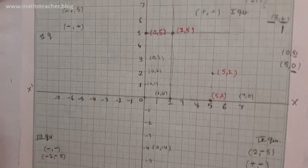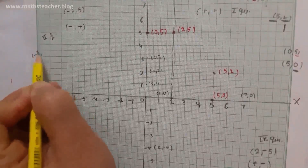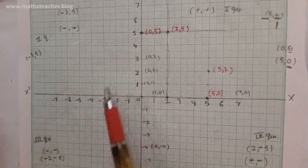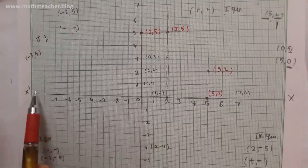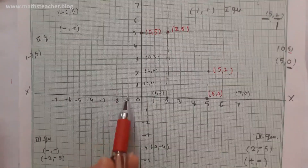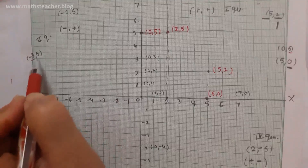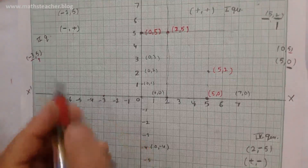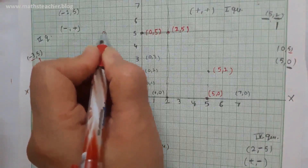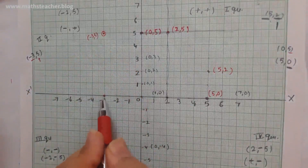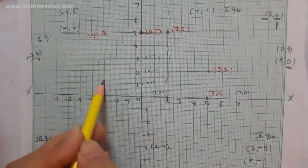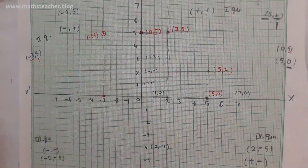Now the next value is negative: (-3, 5). Since x is negative, the direction changes — instead of going right, we go left. So we go 1, 2, 3 steps to the left horizontally. Now go vertical: y is positive, so go up — 1, 2, 3, 4, 5 steps. So our coordinate (-3, 5) is here. Mark this point with a dot. You can also draw a perpendicular from y-axis point and a line from x-axis point — where they intersect is your coordinate.